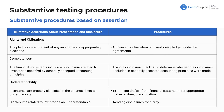Completeness: the financial statements include all disclosures relating to inventories specified under GAAP, making sure everything's assessed under presentation and disclosure. We're going to use a disclosure checklist to determine whether the disclosures included in GAAP were made. GAAP is pretty standard — you'll make sure it says what should be included for inventory, look through the financial statements, and if anything is missing, you'll follow up.